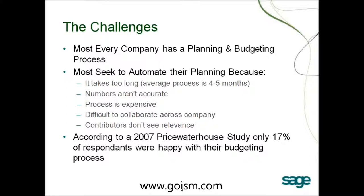We need to streamline the process, and we probably ought to be budgeting more often than just one budget a year — maybe updating it quarterly. We also see folks dealing with inaccurate numbers. You put a lot of time into the process, but nobody pays attention to the budget because nobody has faith in the numbers. The process is also expensive: if you're taking two or three months to put a budget together, that's a lot of time invested by management-level people up to your CFO — some of your better-compensated people.